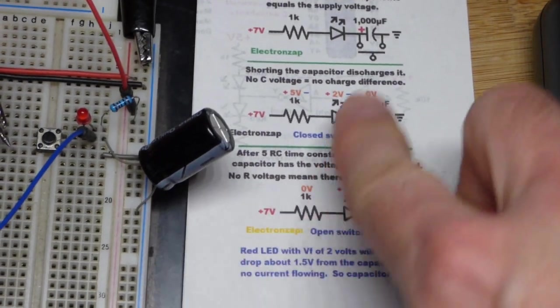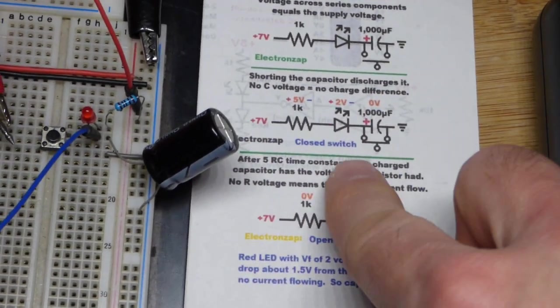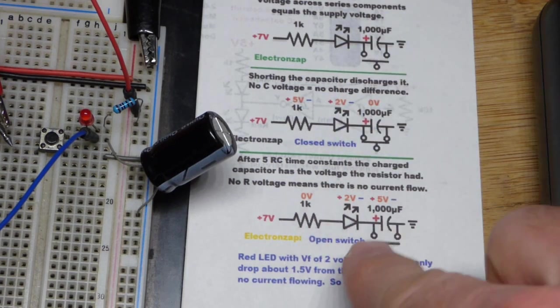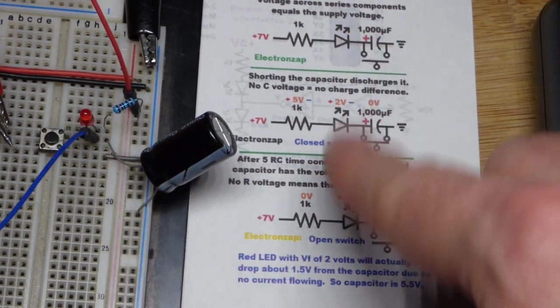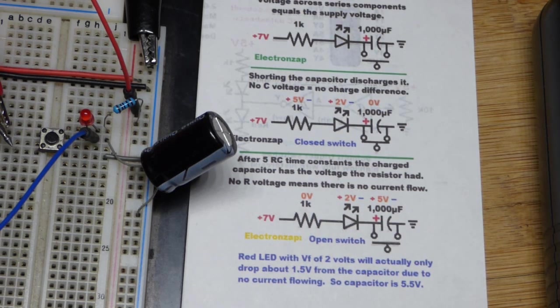So, this is kind of ideal. If LEDs were kind of an ideal forward voltage, it would always be 2 volts for the red one. It would always be 3 volts for the blue ones or green ones.